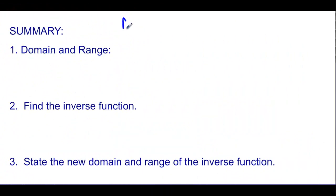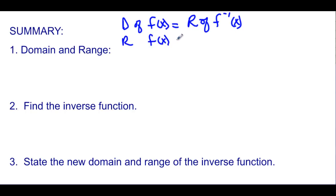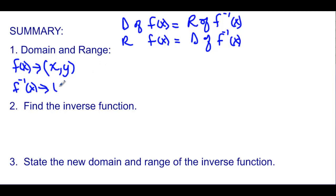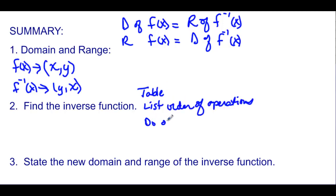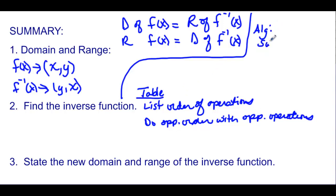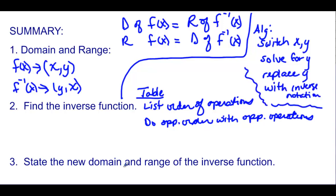In summary: the domain of f of x equals the range of f inverse of x, and the range of f of x equals the domain of the inverse function, because the function has (x, y) and the inverse function has (y, x). To find the inverse function: the table method says list the order of operations and then do the opposite order with opposite operations. Algebraically, switch x and y, solve for y, and replace y with inverse notation. For the domain and range of the inverse function, figure out what they were for your original function — and even if it doesn't seem right, the most restricted domain and range will be your domain and range for the inverse function.